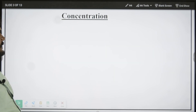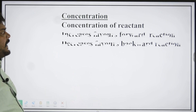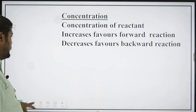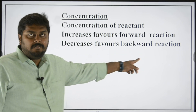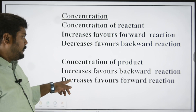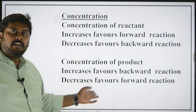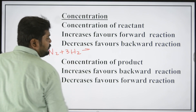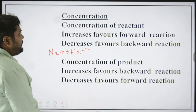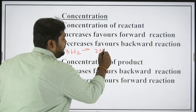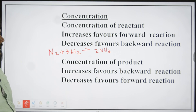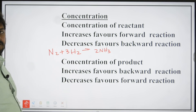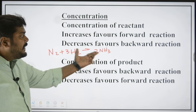First we will start with concentration. If you increase the concentration of the reactant, it favours the forward reaction. If you decrease the concentration of the reactant, it favours the backward reaction. If you increase the concentration of the product, it favours the backward reaction. If you decrease the concentration of the product, it favours the forward reaction. I will give you an example — the formation of ammonia. If I increase the concentration of nitrogen, it favours the forward reaction — ammonia formation. If I decrease the concentration of nitrogen, it favours the backward reaction.